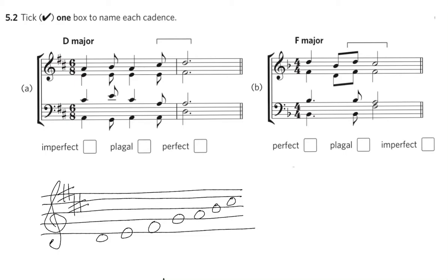Chord I is D major, chord II is E minor, chord IV is G major and chord V is A major.